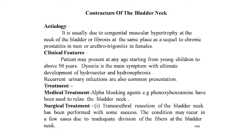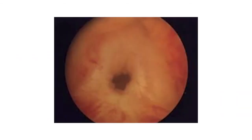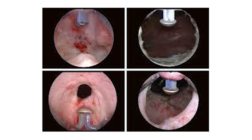This condition may recur in a few cases due to inadequate division of the fibers of the bladder neck. Here is a good picture of the cystourethrogram showing evidence of bladder neck contracture. The cystoscopic picture shows a very small opening of the urethra clearly seen in the first picture.